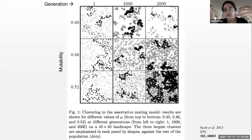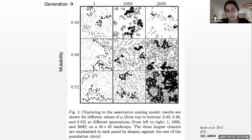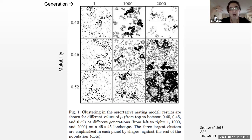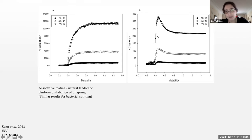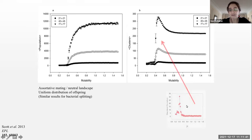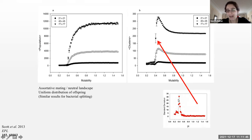This made up the bulk of the doctoral dissertations for Adam Scott and for Dawn King. If you look at things on a flat landscape and change the parameter mu, you also get the same sort of clustering. Since it's on a flatter landscape, you don't have the spatial variability, so it's much easier to analyze rigorously because you've removed one major source of noise. Looking at population versus mutability for the neutral landscape in the assortative mating case — similar results for bacterial splitting — you again see this sharp rise, and the same for clusters.